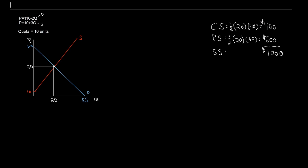Okay, but what about our quota? In all of our other scenarios, we've been looking at price controls — that is, the government setting a specific price that has to be charged. In this scenario, this is more supply management, and what we are doing is restricting the amount supplied, restricting the quantity produced. Our market wants to produce 20 units. In this scenario, we're going to limit our production to 10 units. I'm just going to draw a line straight up through everything and put that at 10. This here is my quantity under our quota.